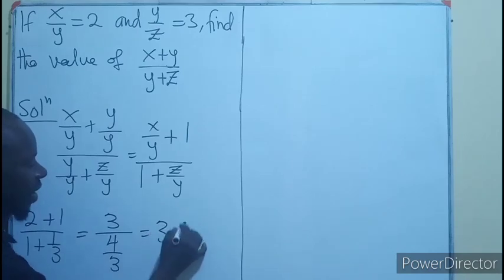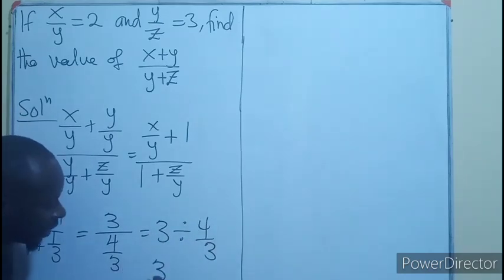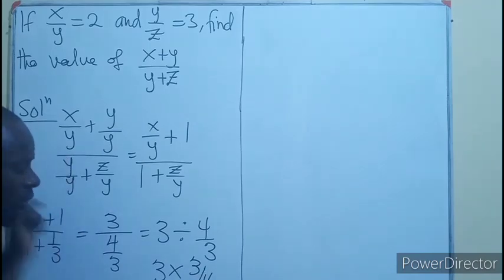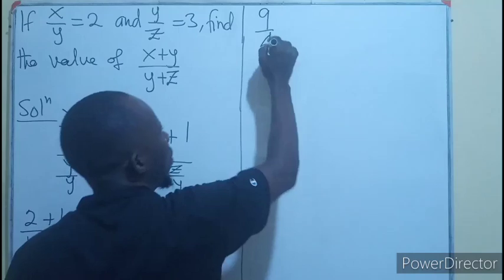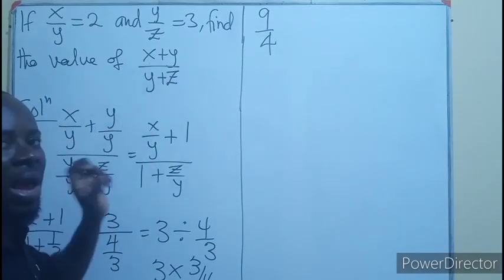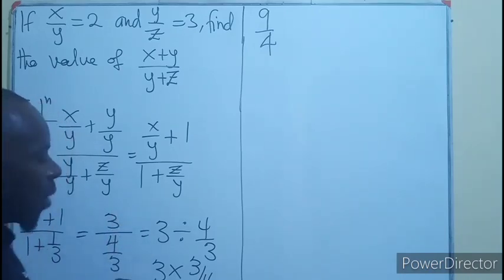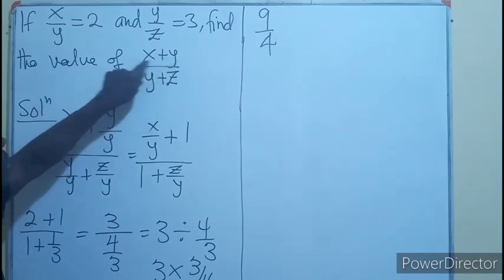We have 3 divided by 4 over 3. We enter the 3, changing this to multiplication, flipping the second fraction. It will be 3 times 4. So 3 times 3 is 9. So 9 out of 4 will be the value of x plus y divided by y plus z. That is if we are following the approach to divide the terms here by y.